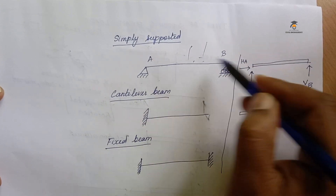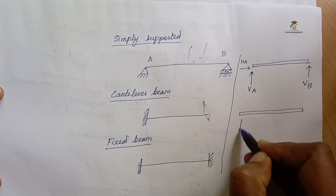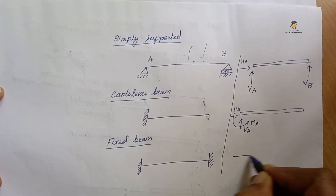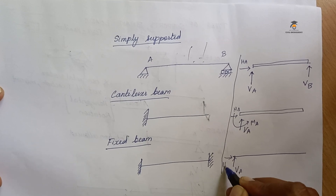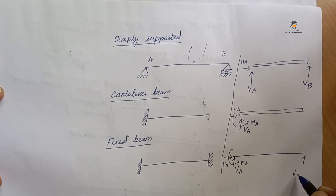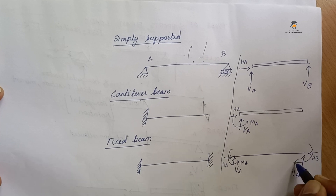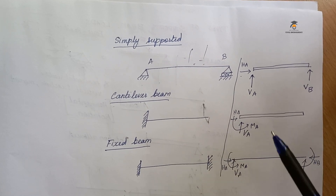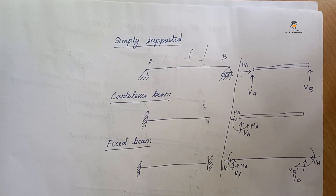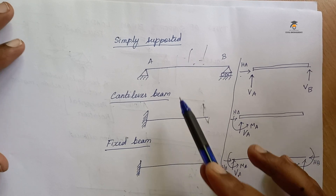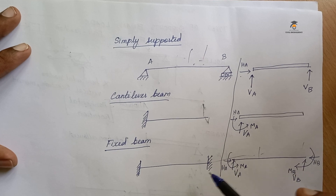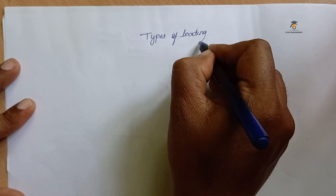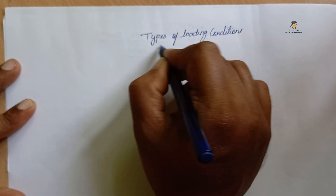This is an external force. For the fixed condition, the reactions are VA, HA, and MA. For a beam, the reactions are VA, HA, MA, VB, HB, and MB — giving six reactions. You can choose types of beams: simply supported, cantilever, fixed, or continuous beam. A continuous beam spans multiple supports.